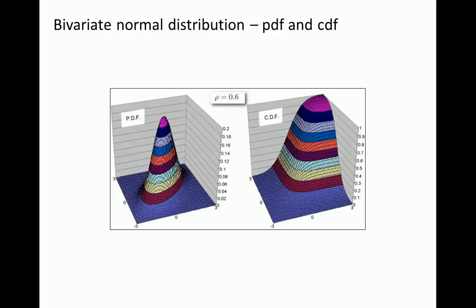This is a picture of the probability density function for a bivariate normal distribution — here we have X, and here we have Y. We could calculate the volume of some part to find the probability of X and Y being in a selected range. And this is the cumulative density function for X and Y — this is just an example when rho equals 0.6.